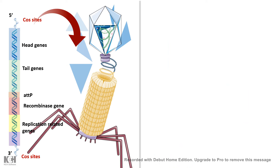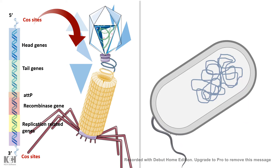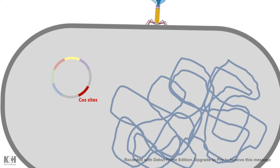The cos sites have another function as well. When the phage infects the bacteria and injects its genetic material, these cohesive ends ensure that the genome circularizes properly inside the bacteria. This circularization brings the attP and attB sites close to each other, which helps them to recombine in a site-directed recombination manner and helps the phage genome get integrated into the bacterial genome.